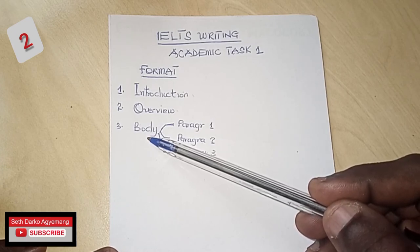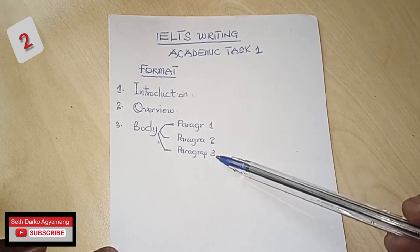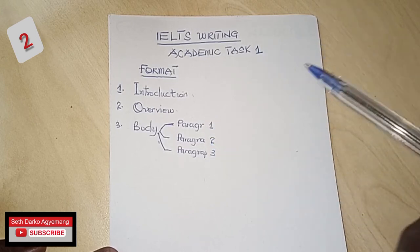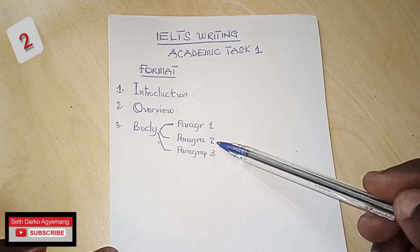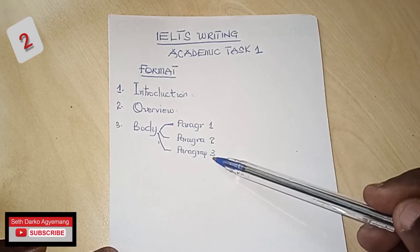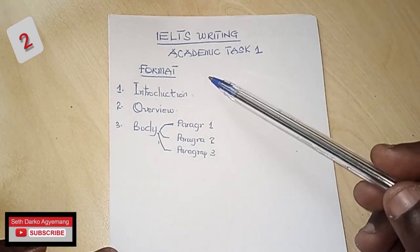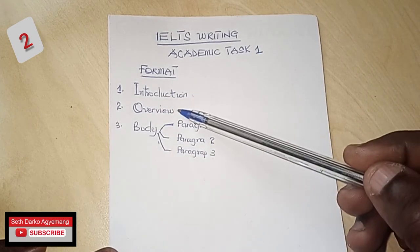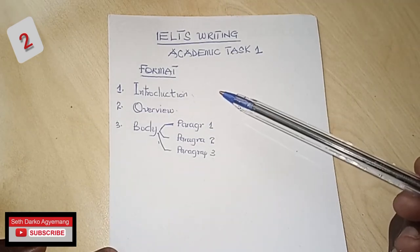After the introduction and overview, you come to the body. Task 1 has a body, and it should be written in paragraphs — paragraph one, paragraph two, and sometimes paragraph three. I usually limit myself to two body paragraphs to save time, since you only have 20 minutes and need to write 150 words. By paragraph two I'm usually at 150 words. Paragraph three comes in only if you believe your word count isn't quite at 150. At the end of Task 1 you have at most five paragraphs and at least four.